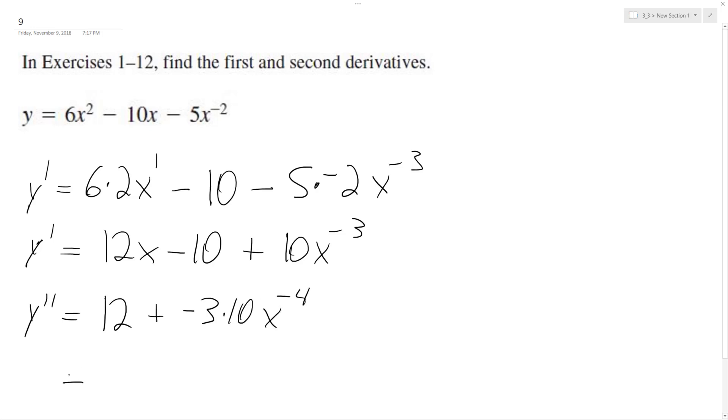So we ultimately end up for y double prime, we get 12 minus 30x raised to the negative 4.